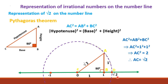In the same way, on the left side of 0 we will have a point whose value is negative square root of 2. Hence, D is the representation of square root of 2 on the number line.